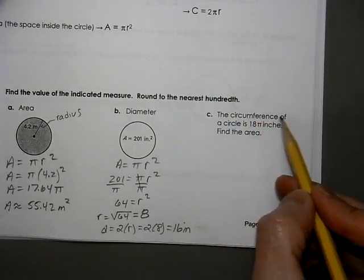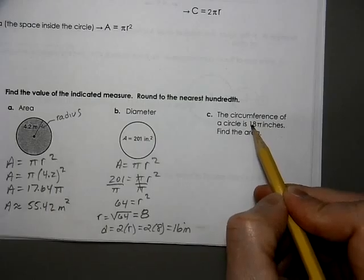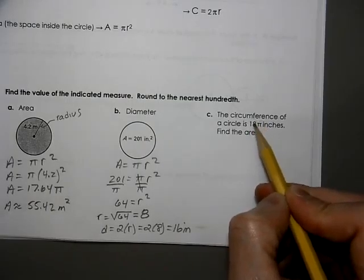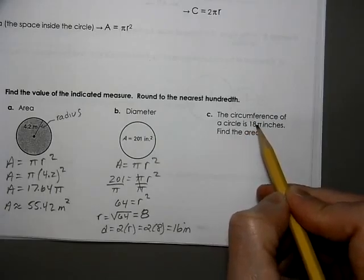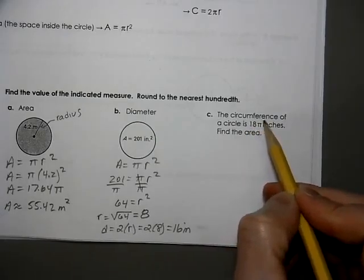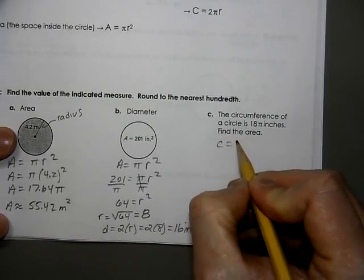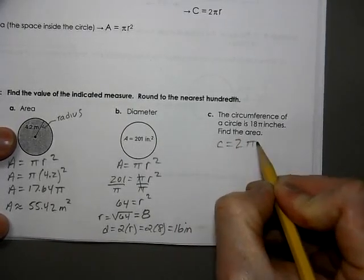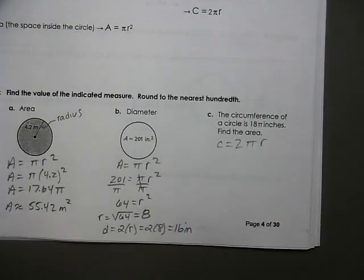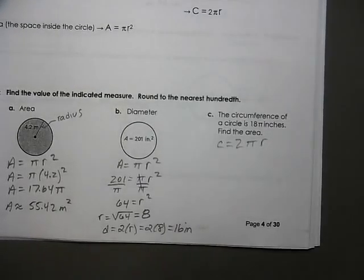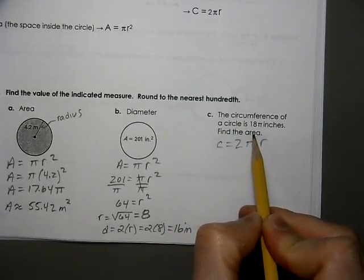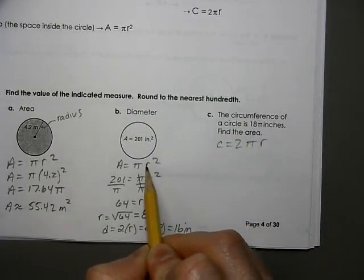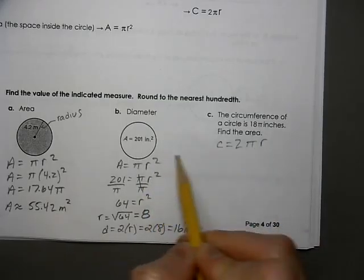Here we have the circumference of 18 pi. Notice how the pi symbol is with the 18. You don't ignore it. The 18 pi is our circumference. Let's start out with the circumference formula. We have two different circumference formulas we could use. We'll use the one with the r, the radius, 2 pi r. Because when we are going to come down and calculate area of the circle, we know we also need the radius. We need to calculate radius.